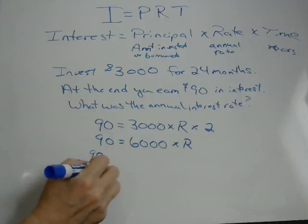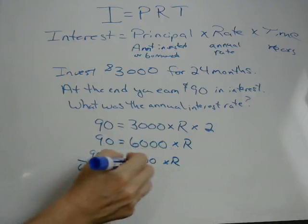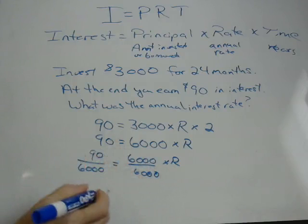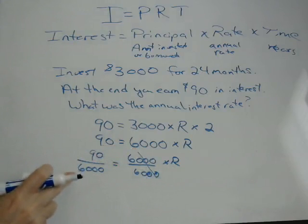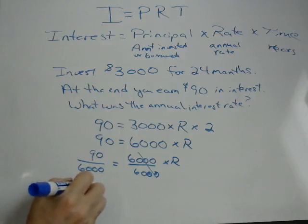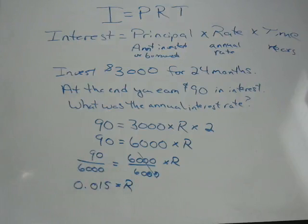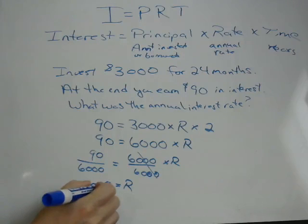So we go 90 divided by 6,000 equals 6,000r divided by 6,000. The 6,000s cancel out, and we get 90 divided by 6,000, which equals 0.015. So r equals 0.015. But that's a decimal, not a percentage. To convert to a percentage, move the decimal point two places to the right, giving us 1.5%. Our annual interest rate is 1.5%.